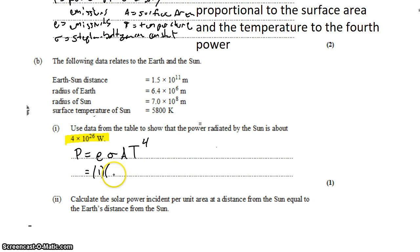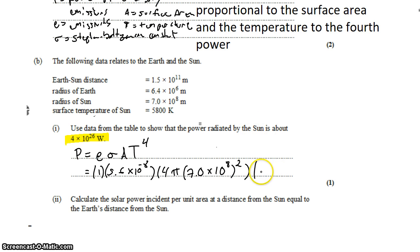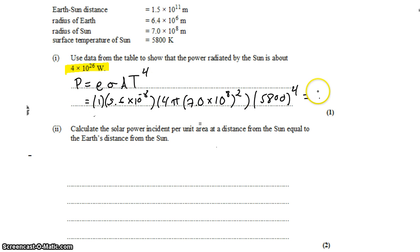The Stefan-Boltzmann constant is 5.6 times 10 to the negative 8. The surface area of the sun is not given directly; instead we're given the radius of the sun, and you need to remember from geometry that the surface area of a sphere is 4πr². That's presumed knowledge — not in the data booklet. Finally, the temperature is 5,800 Kelvin, raised to the fourth power. Plugging that into the calculator gives 4 times 10 to the 26 watts.